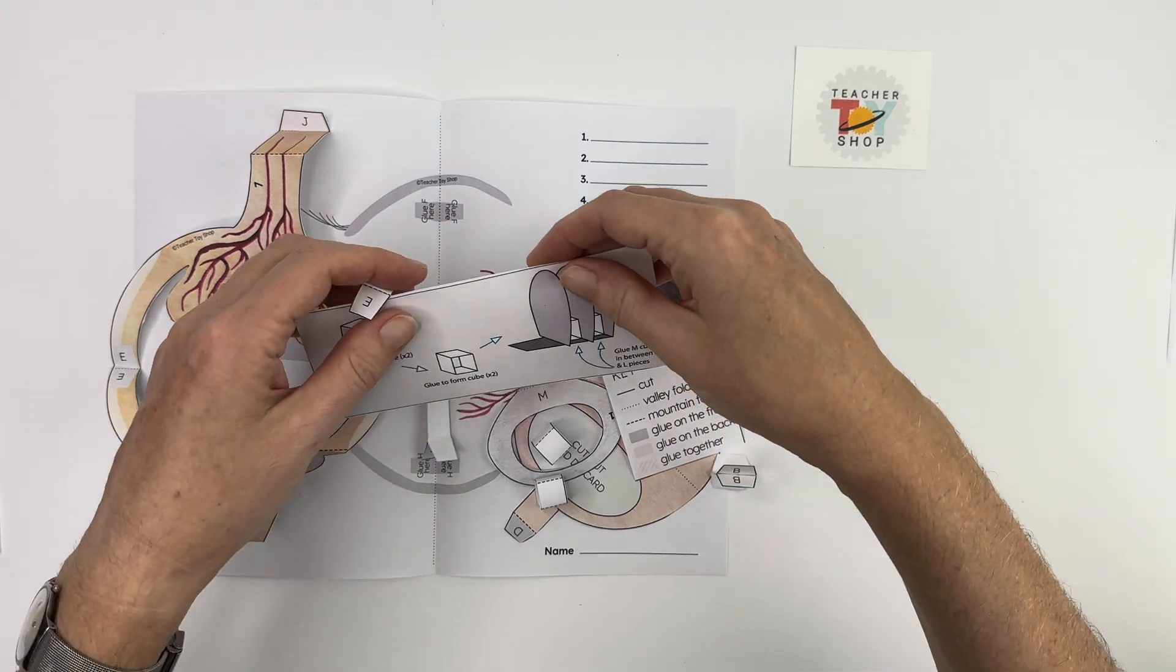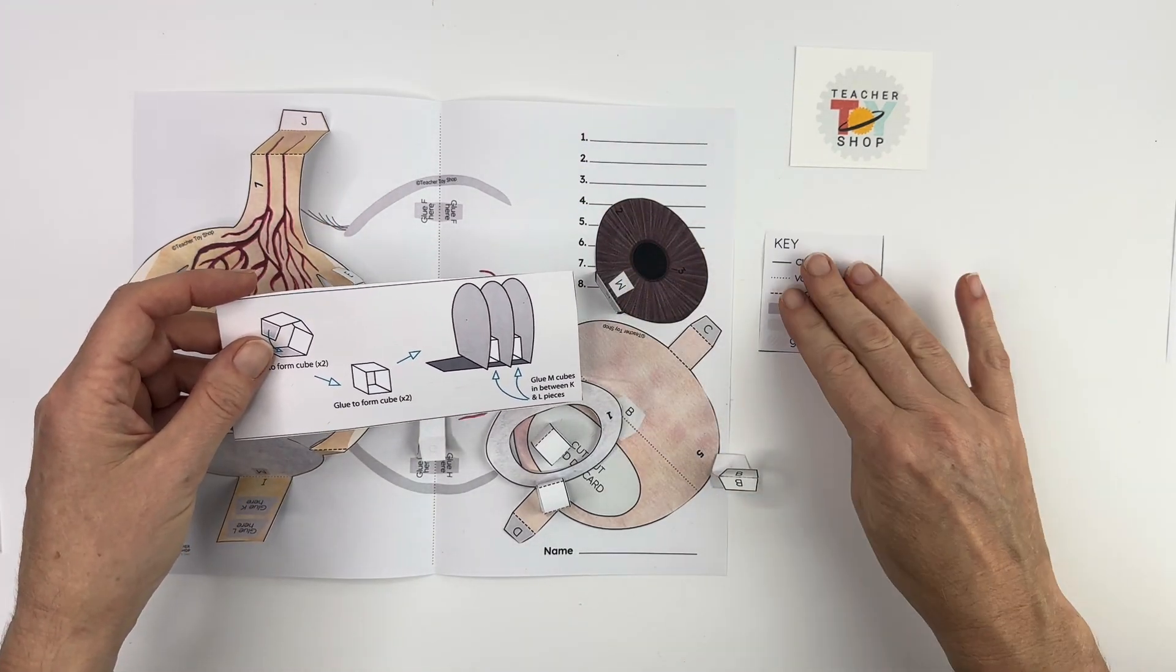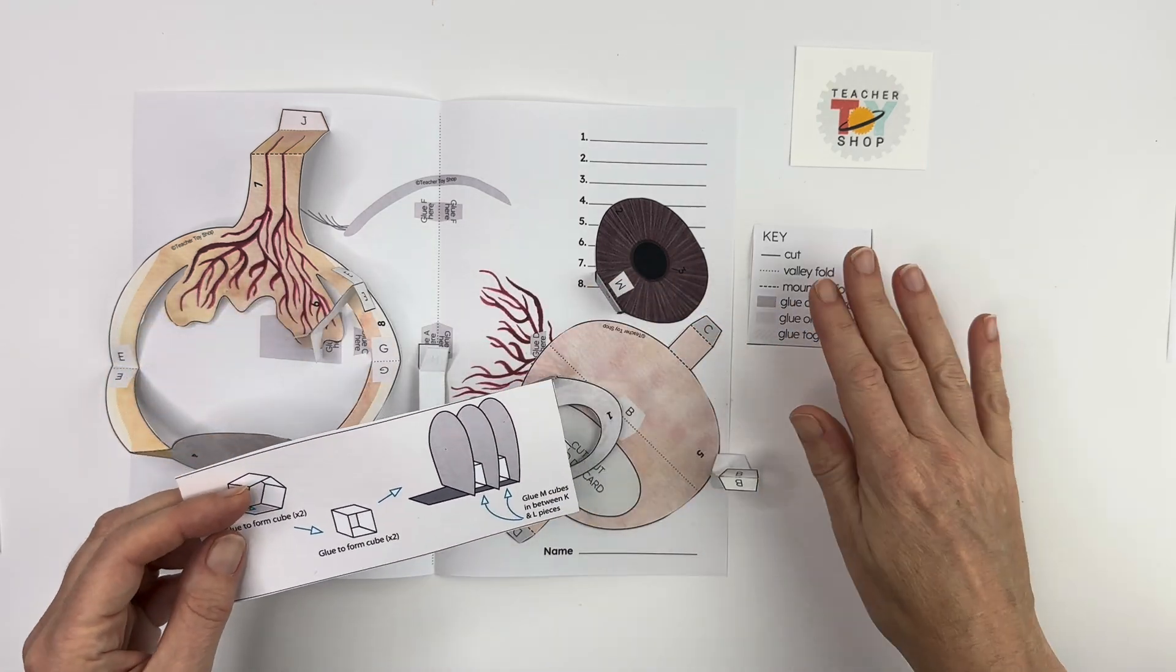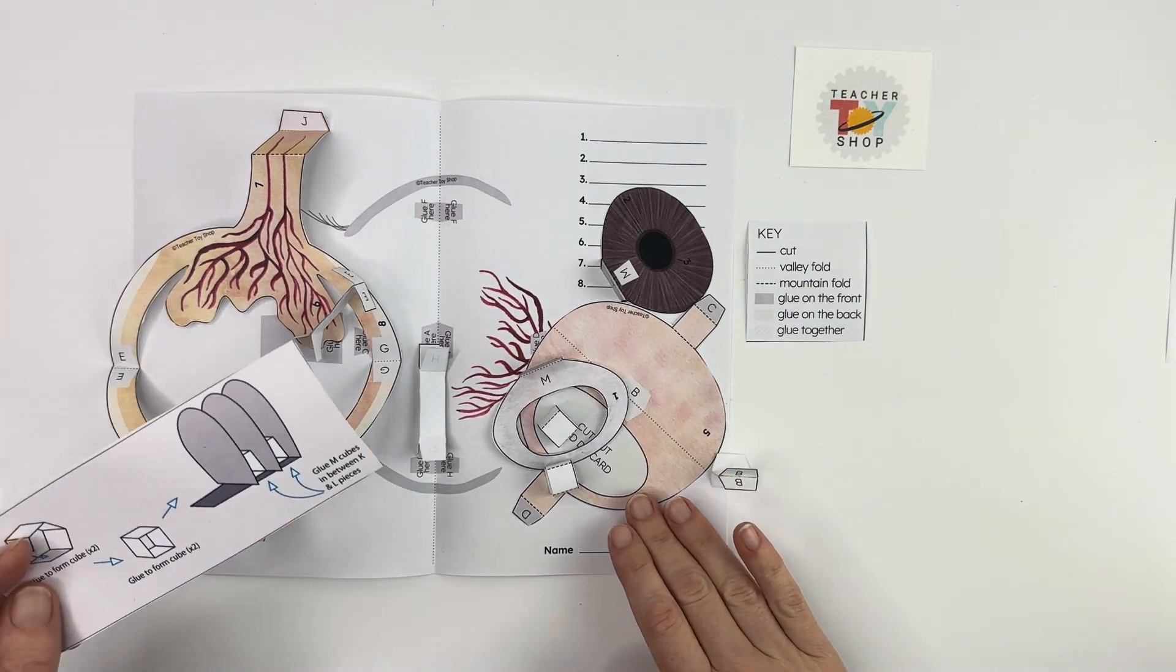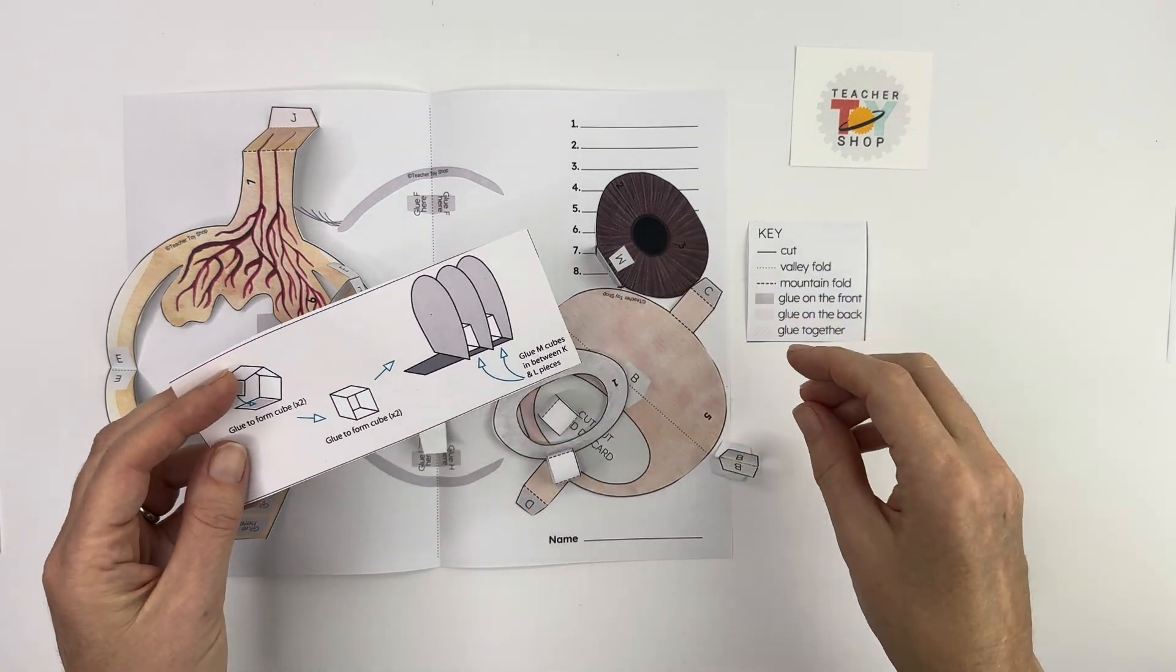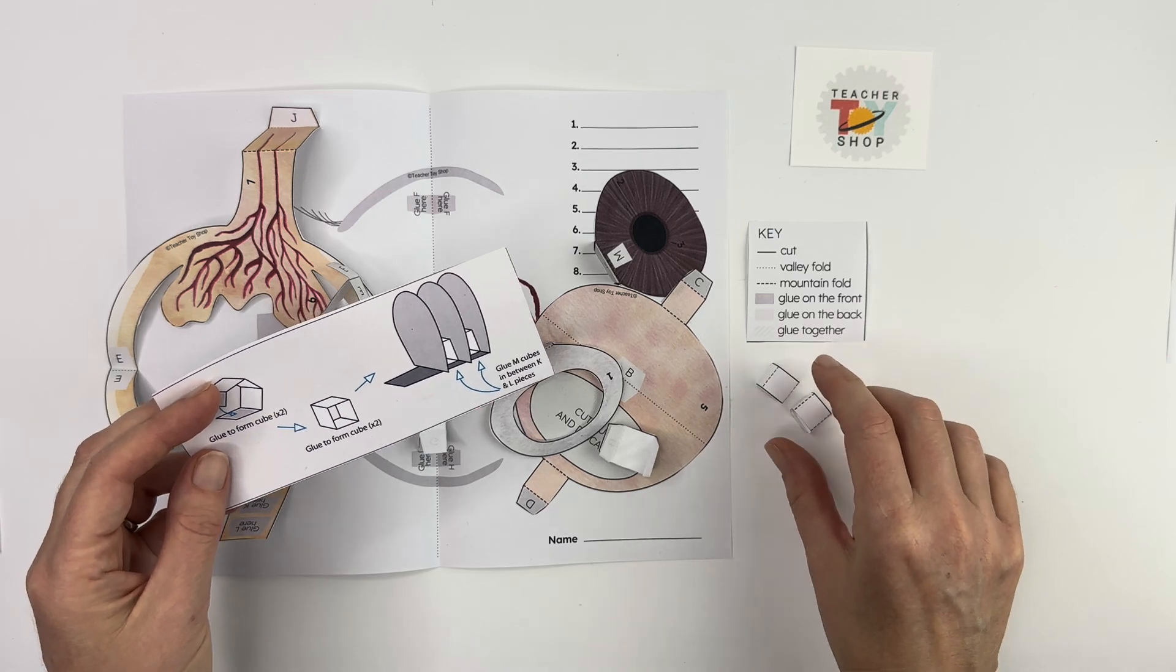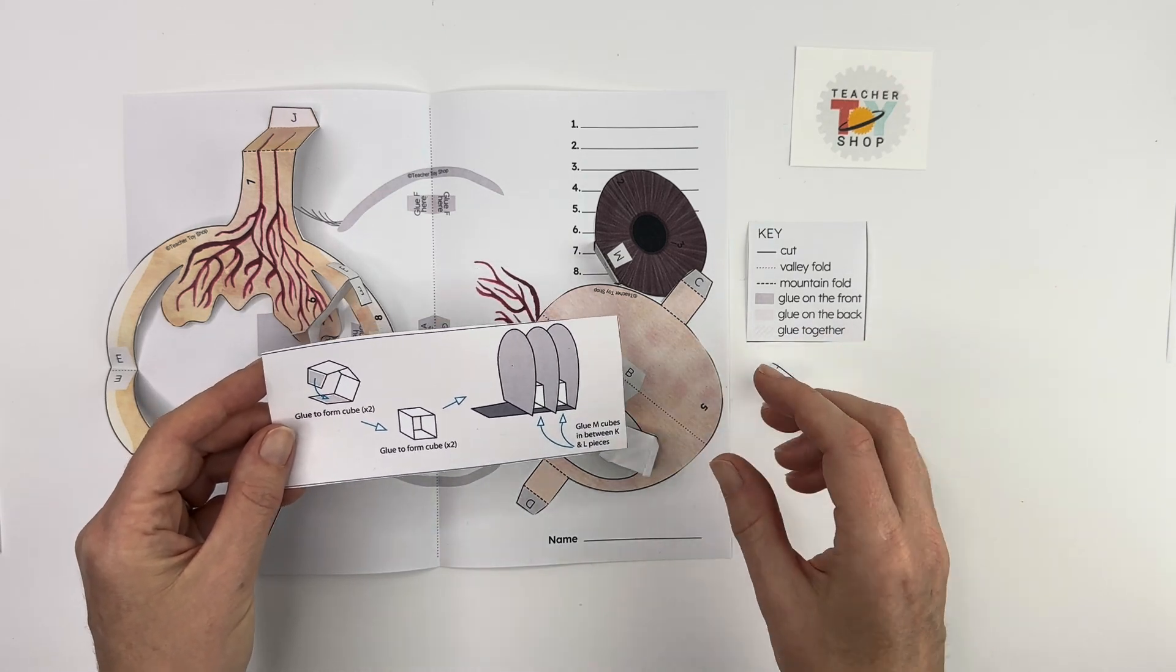One of the things you want to do is to keep the key on hand so that you can pay attention to that as you're gluing and folding. And then this piece here shows you how to fold these little boxes and fold and glue them so definitely follow those directions to do that.